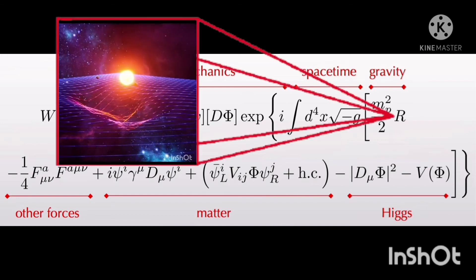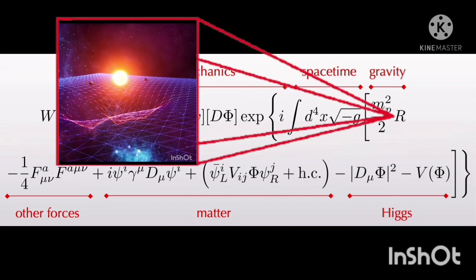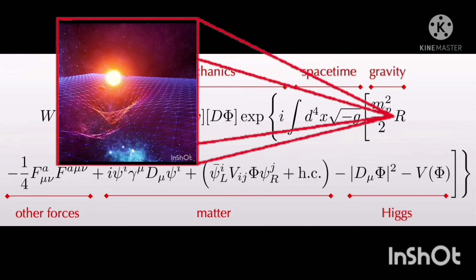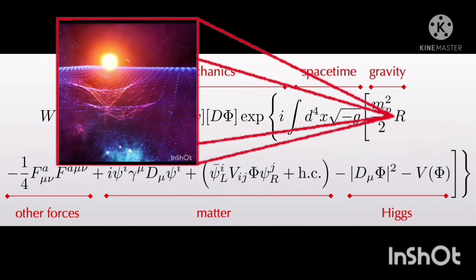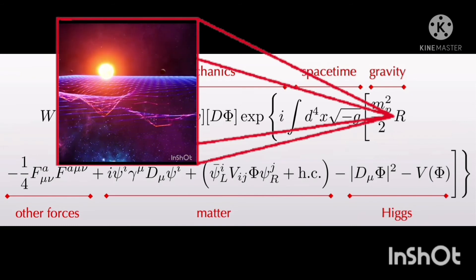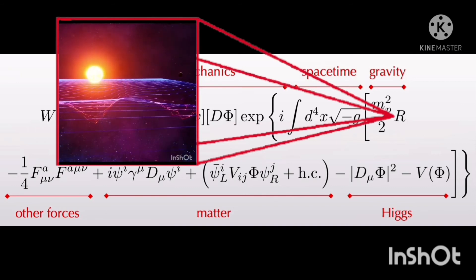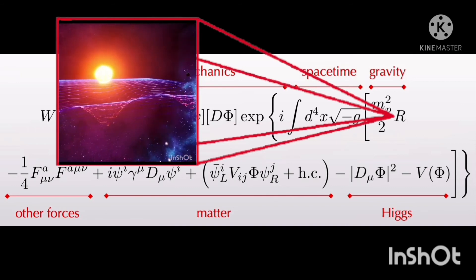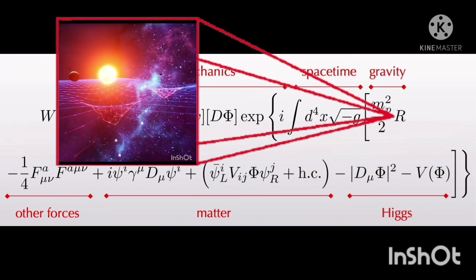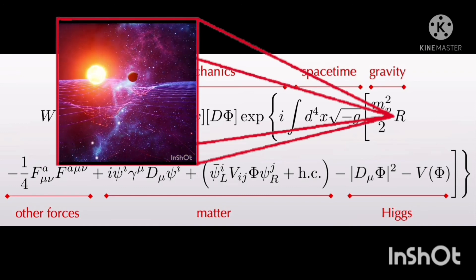R is a curvature tensor and represents the curvature of spacetime that bends the fabric of the spacetime continuum. This is basically quantifying the general relativistic notion that matter compels spacetime to curve and the curvature of spacetime compels matter to move.